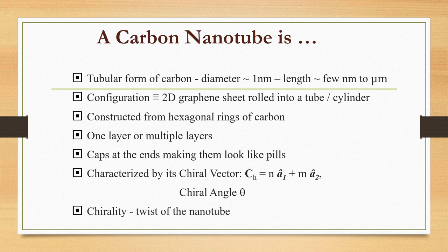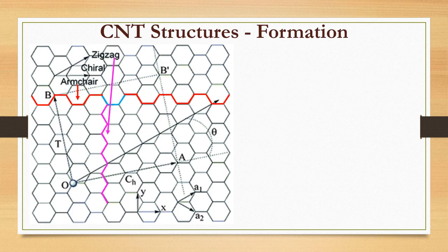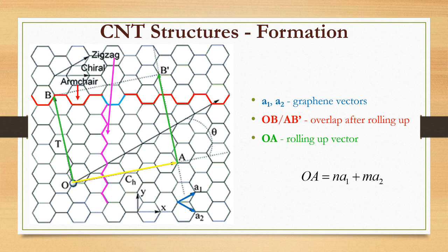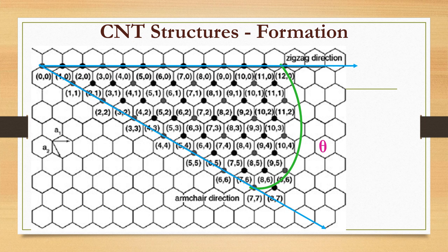There are various CNT structures depending on how the graphene sheet is rolled, characterized by certain vectors. A1 and A2 are the graphene vectors. Single wall nanotubes are formed by rolling a sheet of graphene into a cylinder along an MN lattice vector. The MN indices determine the diameter and chirality of the carbon nanotube.